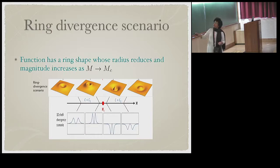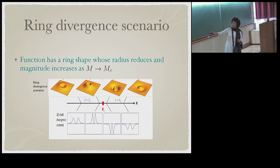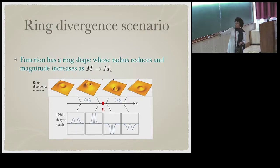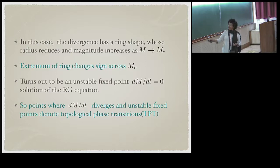There is also a ring divergence scenario: instead of diverging at a point, the curvature function diverges as a ring around the point, and it is the maximum of the ring that changes sign. In 1D this manifests as two peaks whose sign changes across mc. The extremum of the ring that changes sign across mc turns out to be an unstable fixed point of the RG equation. Points where dm/dl diverges or are unstable fixed points denote topological phase transitions.